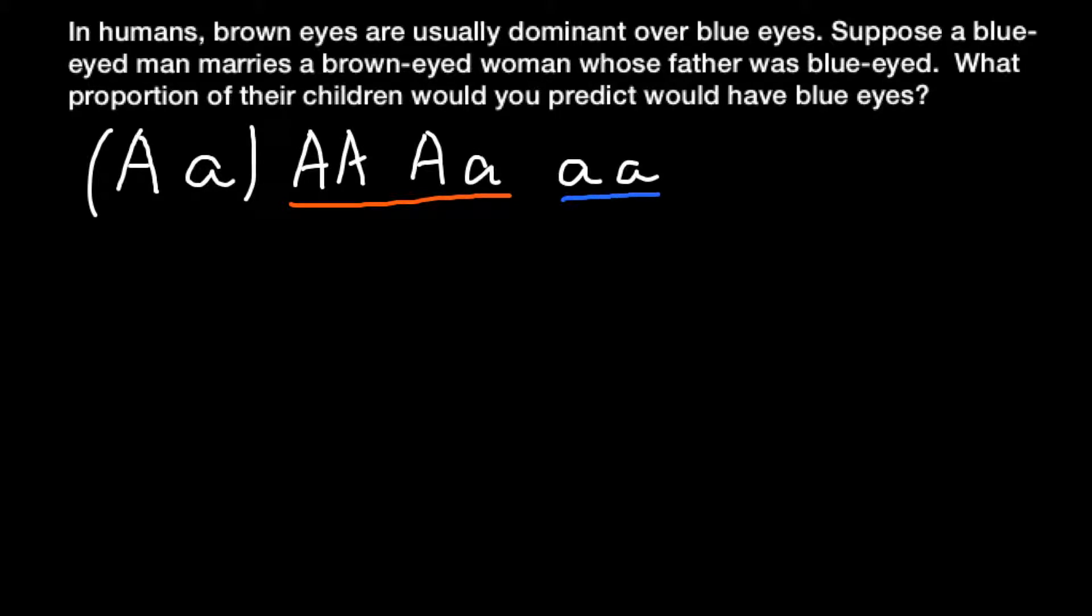So let's now analyze our problem. We're told that a blue-eyed man, and that means this man belongs to this genotype here, marries a brown-eyed woman whose father was blue-eyed. So let us build a Punnett square. Here is a female who is brown-eyed, but we don't know whether she is homozygous for this trait or heterozygous. But we know for sure that at least one allele would be dominant A.